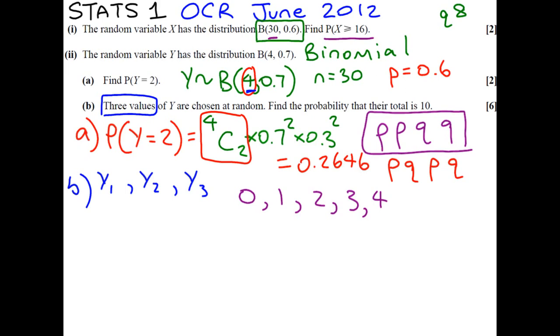So immediately you might see 4, 4, 2. And with a bit of thought, you might see 3, 3, 4. They both total 10. There's no other ways to pick three numbers out of here and make 10. Only these two ways. So we need to think about the probability of each of these happening.